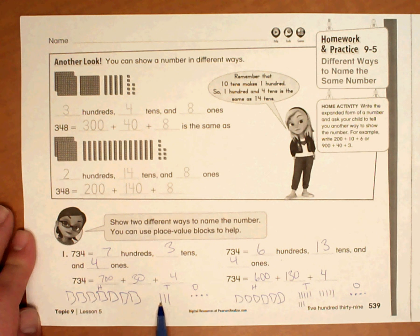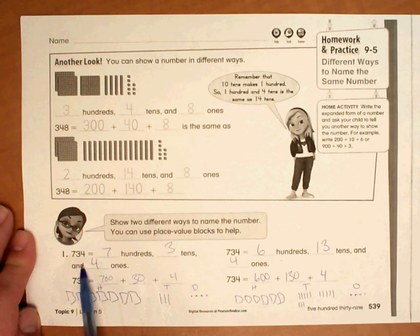In the tens place is a three, so I have three rods, three tens. In the ones place, I have four ones. So I will have seven hundred plus thirty plus four, which equals 734.